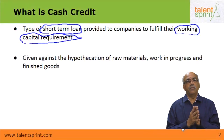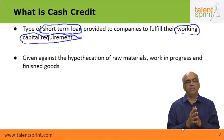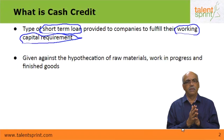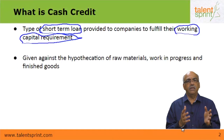A cash credit is given against hypothecation of raw materials, work in process, finished goods, and receivables. These are the different assets a company can have normally. For example, a company which manufactures tires — the raw material is rubber. So the cash credit loan is given against the hypothecation of this raw material called rubber.